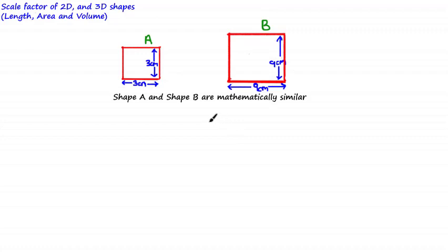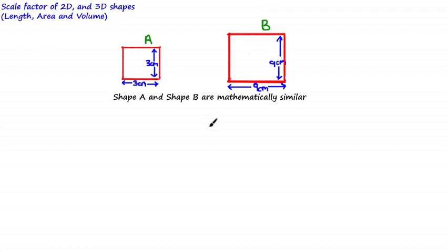Hi guys and welcome to this tutorial. In a previous tutorial we said that two shapes are similar if one shape is an enlargement of the other. So far we've described this enlargement by comparing corresponding lengths. But for a 2D shape you can also describe the enlargement by comparing areas, and for a 3D shape by comparing volumes. This means we can find the scale factor of area and volume, and in this tutorial we'll use an example to calculate the scale factor of length, area, and volume, and see the relationship between those values for similar shapes.